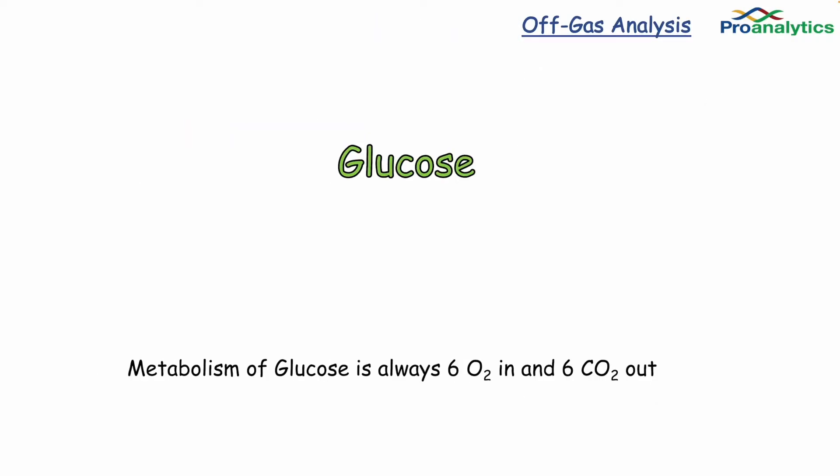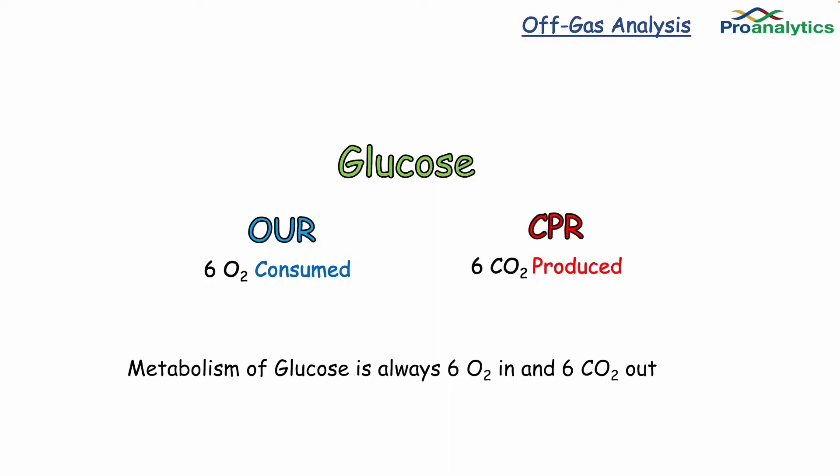When an aerobic organism metabolizes glucose, six molecules of oxygen are consumed and six molecules of CO2 are formed. These are the oxygen uptake rate, or OUR, and the carbon dioxide production rate, or CPR.